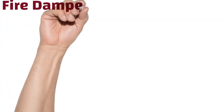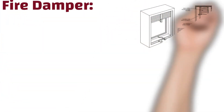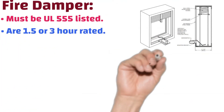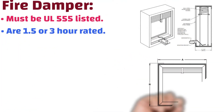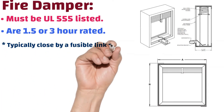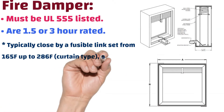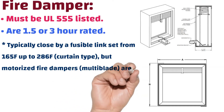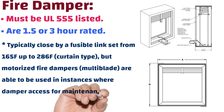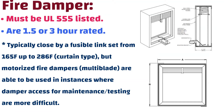Fire dampers must be UL 555 listed and are 1.5 or 3-hour rated, typically closed by a fusible link set from 165 degrees Fahrenheit up to 286 degrees Fahrenheit. Curtain-type dampers, motorized fire dampers, or multi-blade dampers can be used in instances where damper access for maintenance and testing is more difficult.